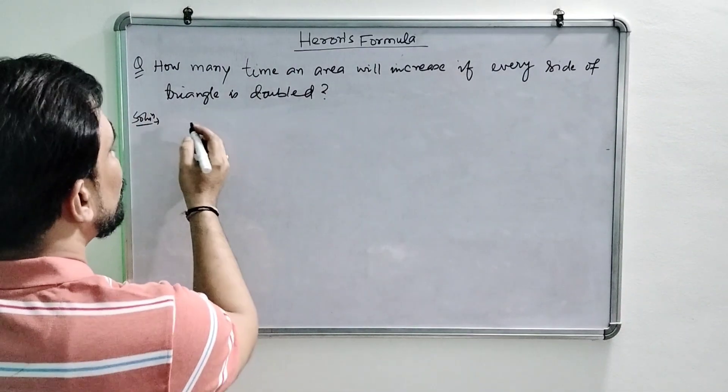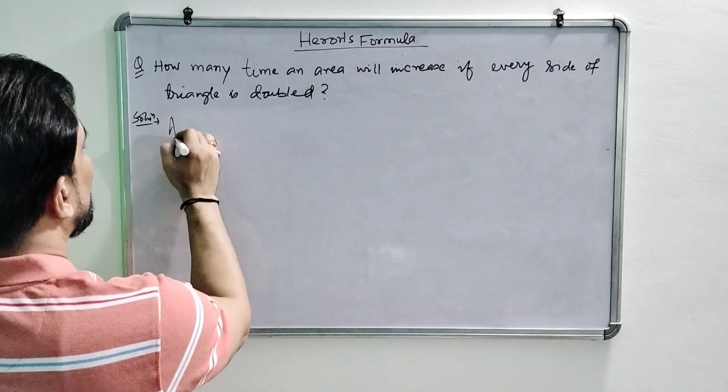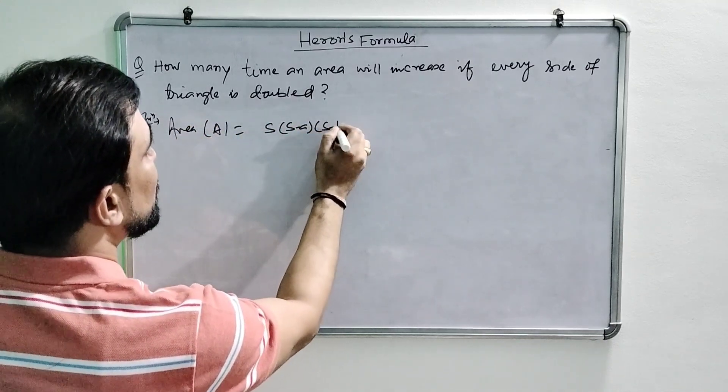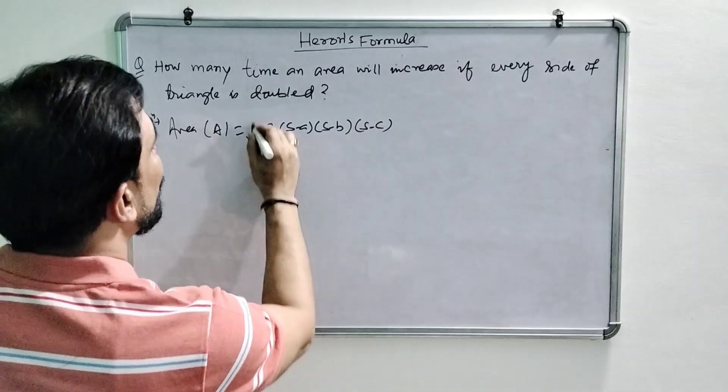By using Heron's formula we know that area is equal to square root of s into s minus a, s minus b, s minus c, where a, b, c are sides and s semi-perimeter is a plus b plus c upon 2.